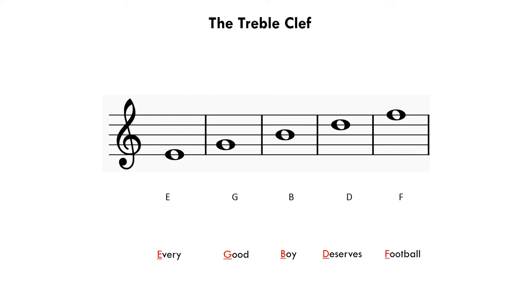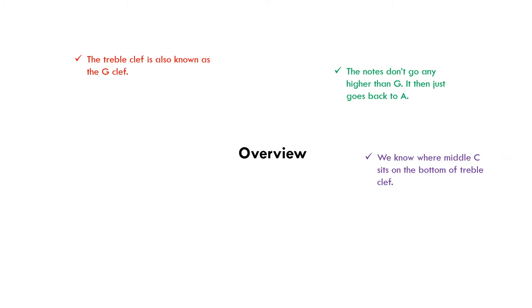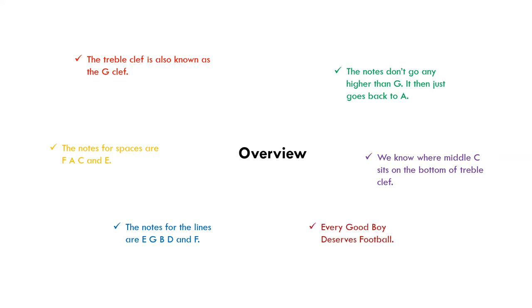The information we've obtained in this section is that another name for the treble clef is the G clef. Middle C sits at the bottom of the treble staff. The notes only go as high as G and then go back to the note A. The notes for the spaces are F, A, C and E — we use the word FACE to remember the order starting from the bottom space. The notes for the lines are E, G, B, D and F — we use the phrase 'Every Good Boy Deserves Football' to remember the order starting from the bottom line.